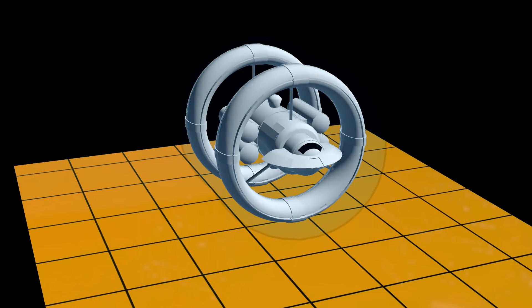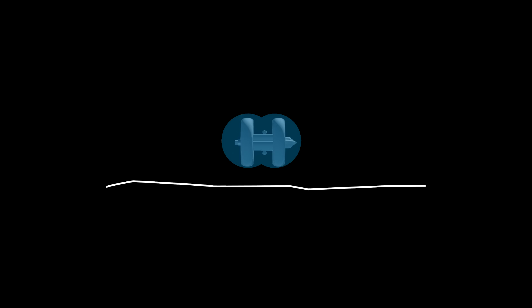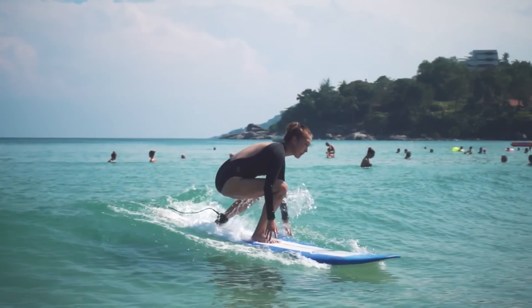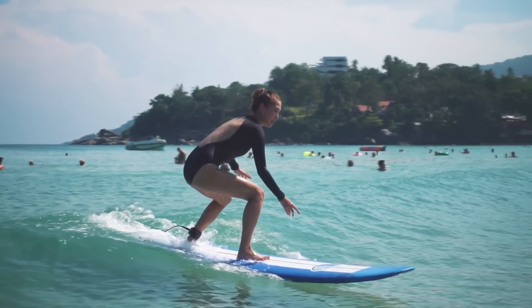And this is how Alcubierre's warp drive would work. Take a spaceship and put a bubble of space around it. If you can compress space in front of the bubble and expand space behind the bubble, then you can make the bubble of space along with the spaceship move. This would be like riding a wave on a surfboard.